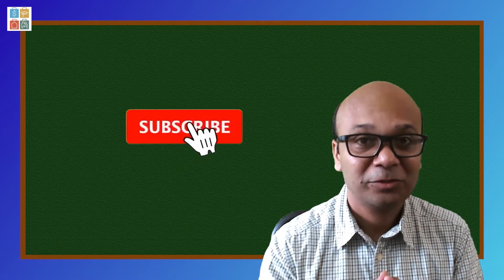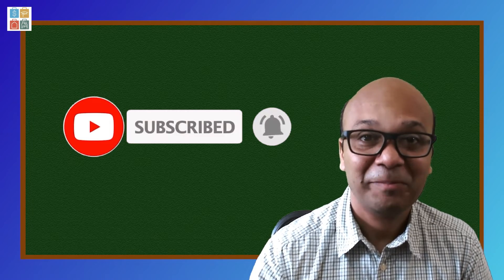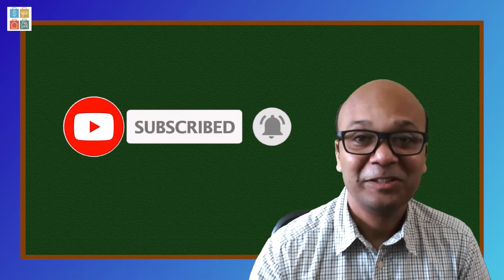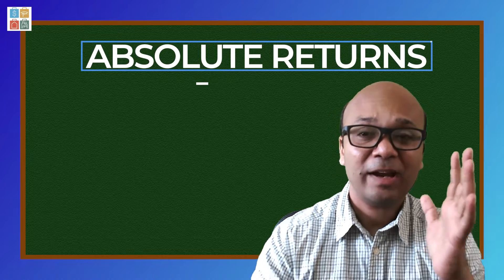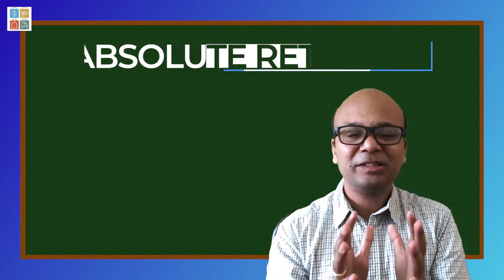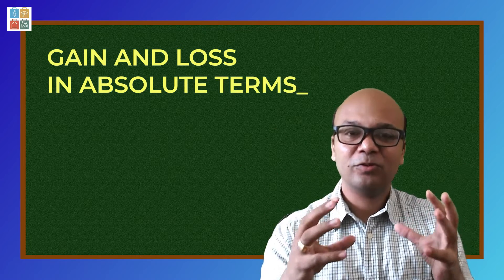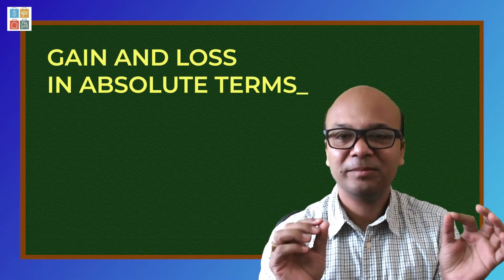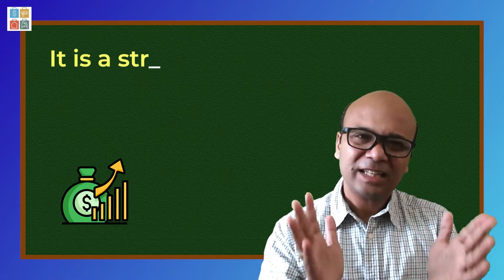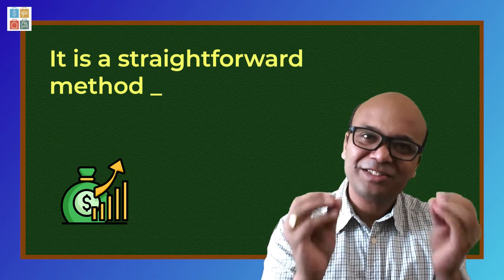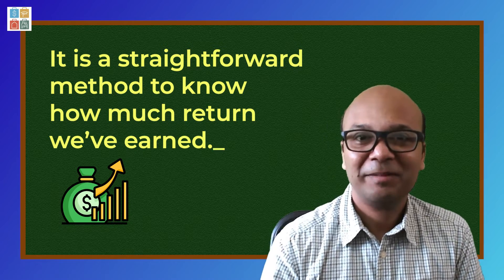Please do subscribe to our channel so that you will automatically receive our latest releases. Let's talk about absolute returns first. Absolute returns in simple terms tell you the gain or loss in absolute terms — for example, 1 lakh becoming 10 lakhs, how much return happened. It is the most direct, most straightforward way to understand how much money we made.